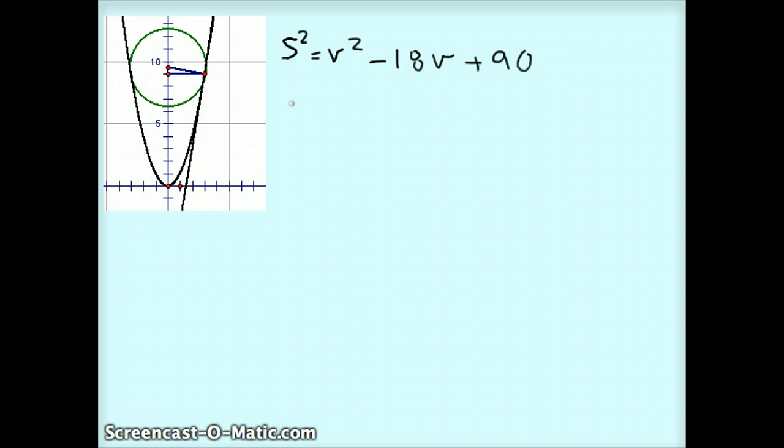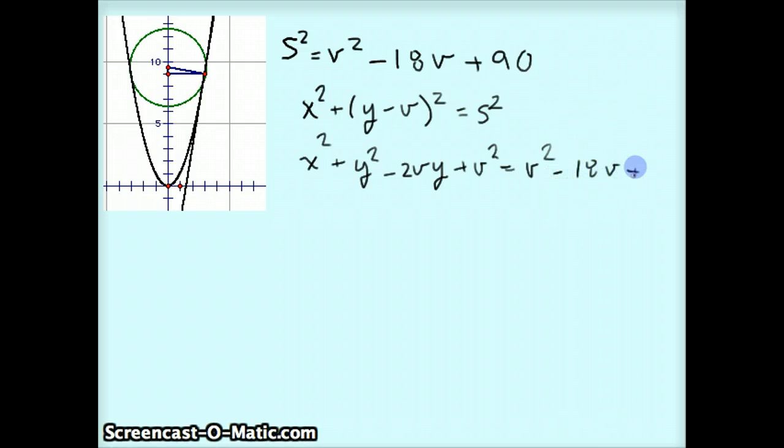Since this circle has center 0 comma V and radius of S, the equation for the circle is going to be X squared is going to be X squared plus Y minus V squared equals S squared. There's a lot of variables here, X, Y, V, S, but watch what happens. When I expand this ad, I get X squared plus Y squared minus 2VY plus V squared. And remember, we already have this relationship that S squared can be replaced with V squared minus 18V plus 90.